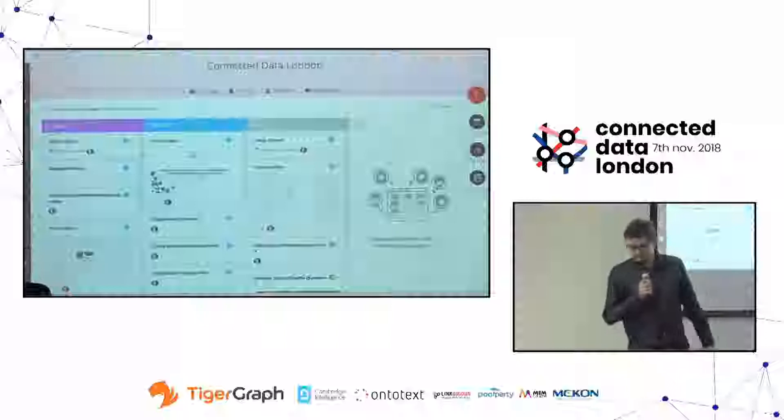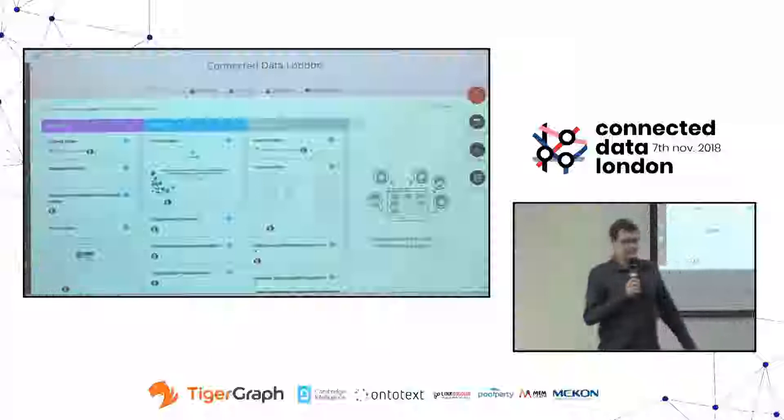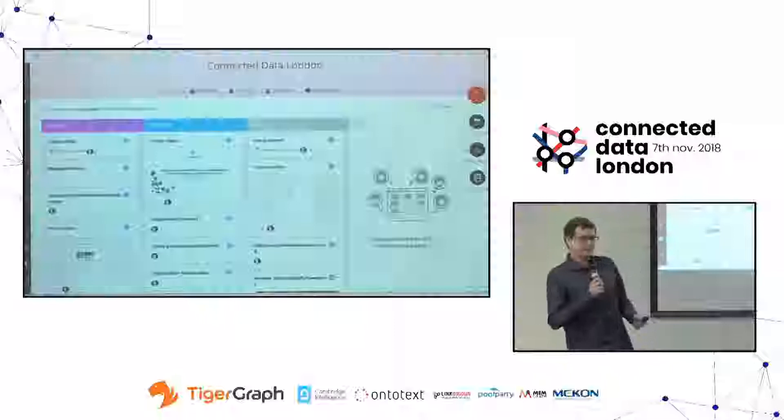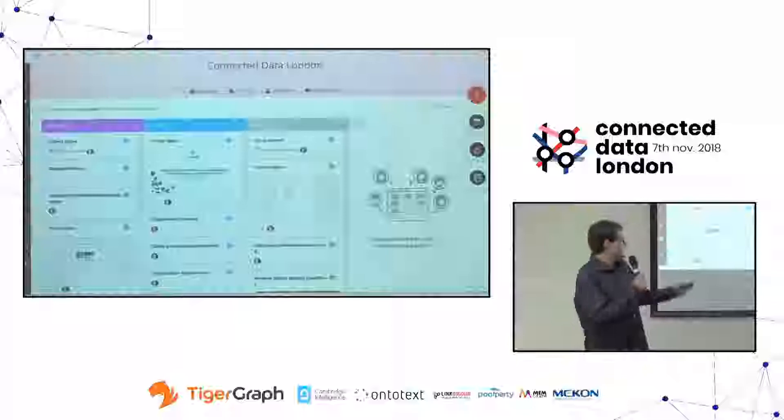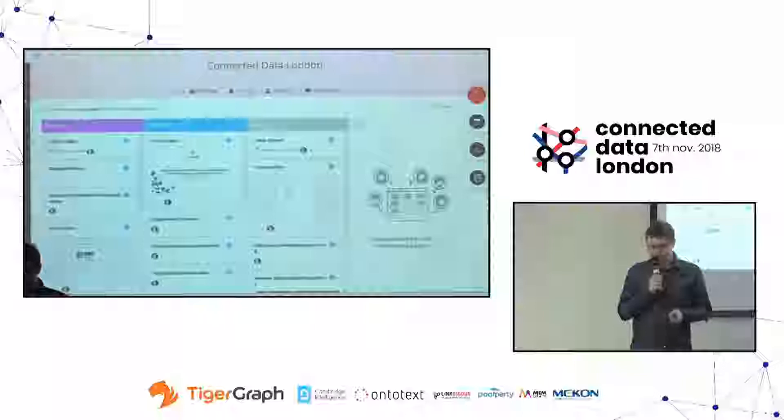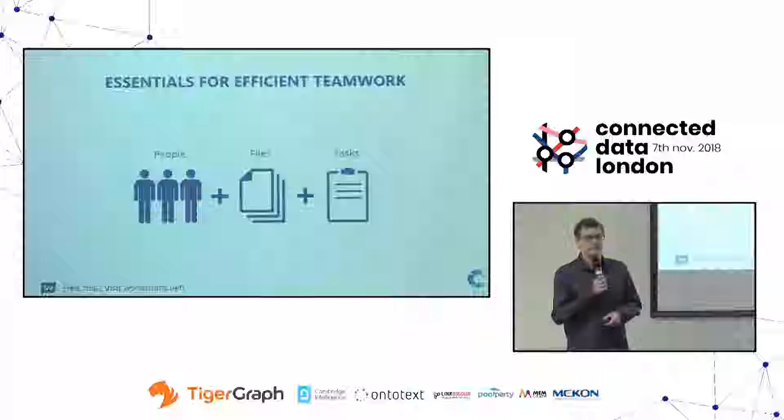A small overview of our collaboration product called Workrooms: you can actually use it to make it to a conference like this one, because it allowed us to coordinate via tasks, plan the journey, plan the attendance, and generate the presentation as output. It's for HR teamwork — whenever you need to get stuff done involving people working on files and coordinating via tasks.